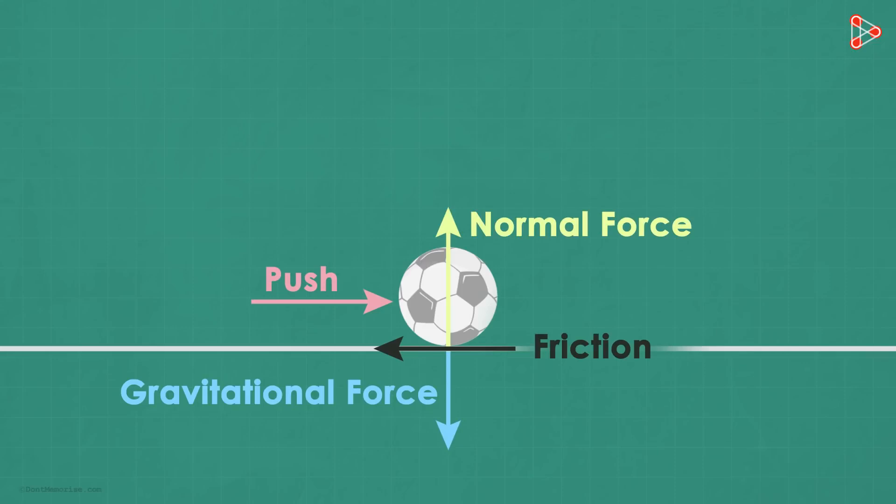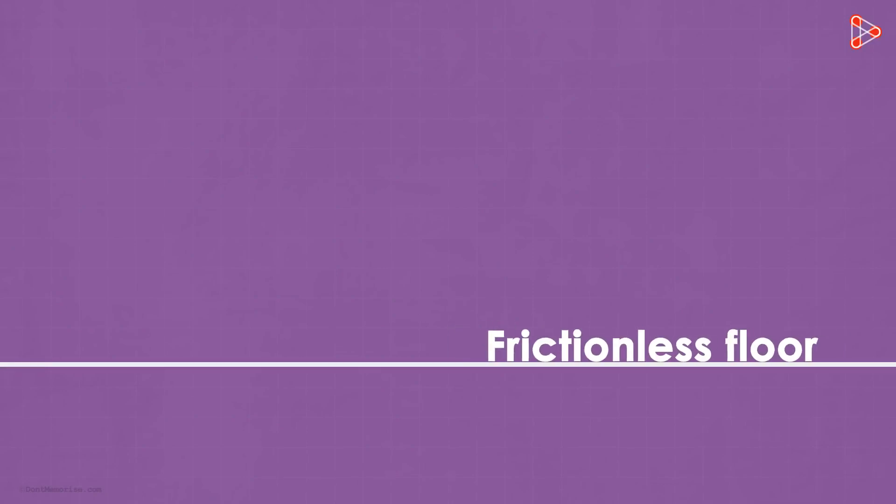Let's make it even more interesting. Assume your screen to be a frame of reference in this example. Also assume that this straight horizontal line is a frictionless floor and there's no air resistance. The ball appears from the left of your screen and moving towards the right at a uniform velocity of 2 meters per second.